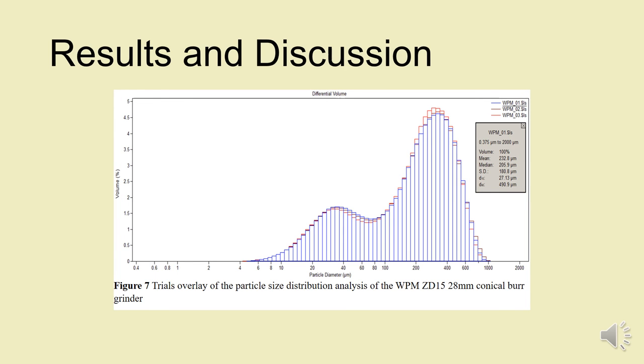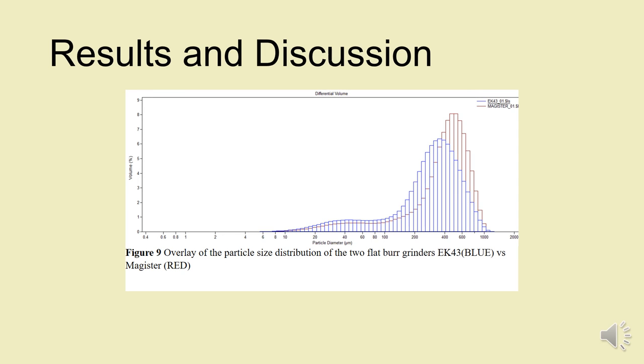The flat burr, or the conical burr, clearly has a wider array of particle size distributions. The fines peak is more pronounced. It has a wider particle size distribution compared to the flat burr, which has a more consistent grind size. From this one, we can clearly see that it's the grinder type that really has a big effect on the bimodality of coffee grinds.